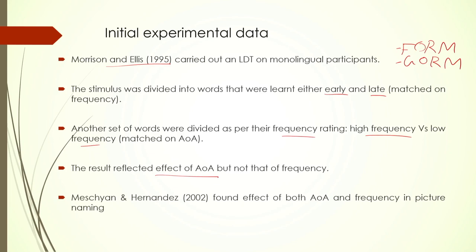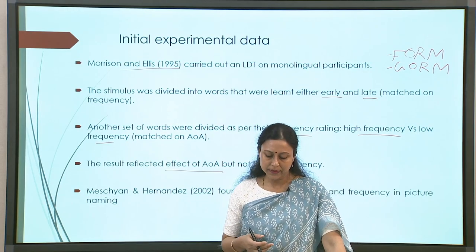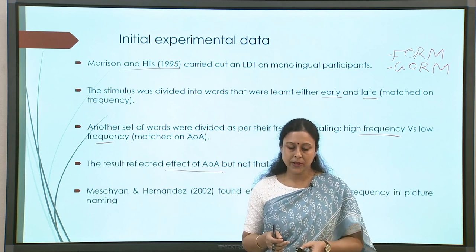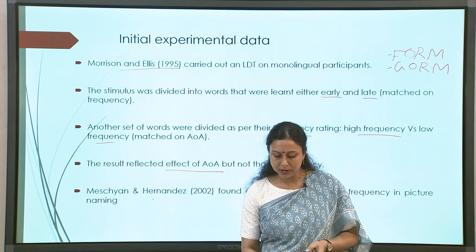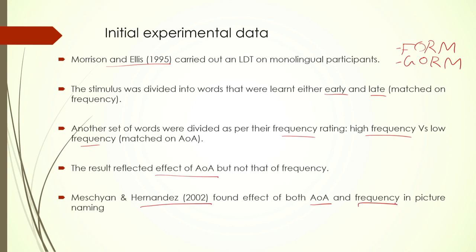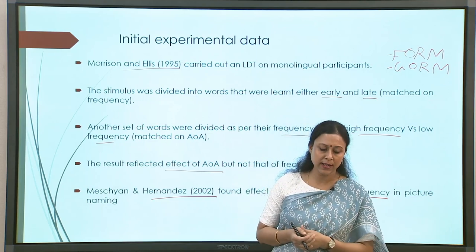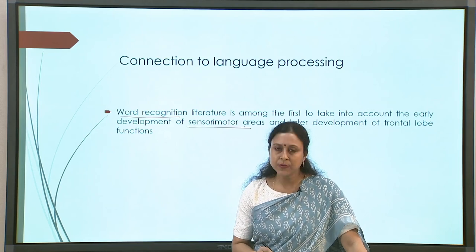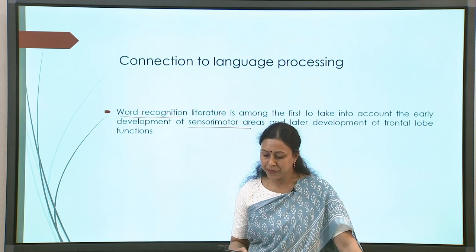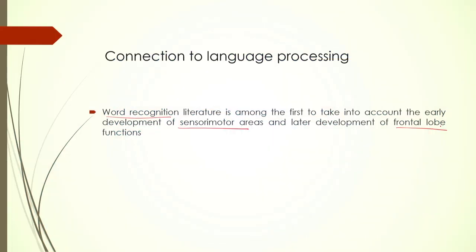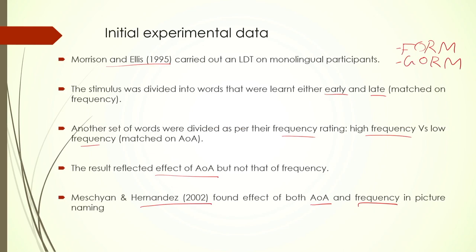Another study a little later found out that both age of acquisition and frequency had an effect on picture naming task, though the earlier LDT study did not find a frequency effect. The idea was to check if the sensory motor areas or the prefrontal cortex are utilized — since we know sensory motor areas are developed earlier compared to the frontal lobe, which develops much later. What they wanted to see was whether early-learnt words activate the sensory motor domain and later-learnt words activate the frontal lobe.